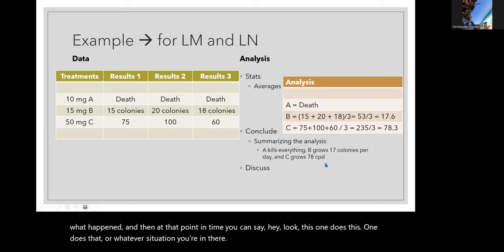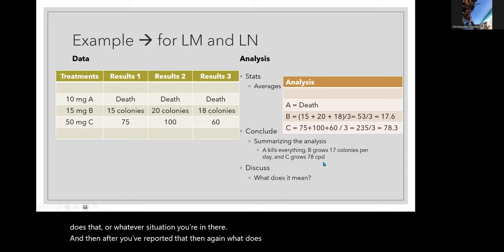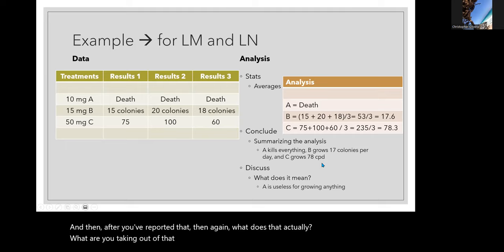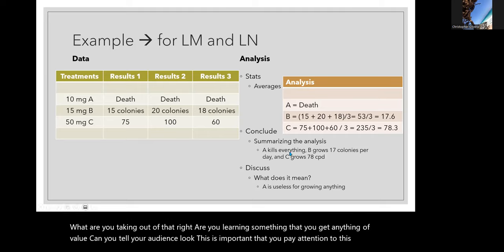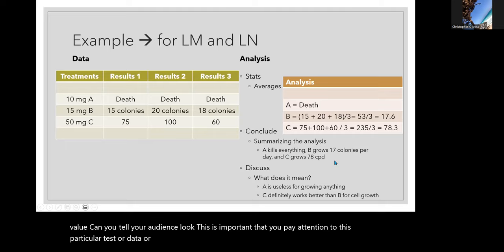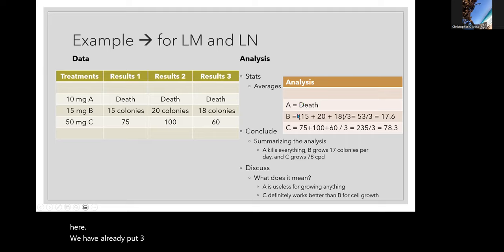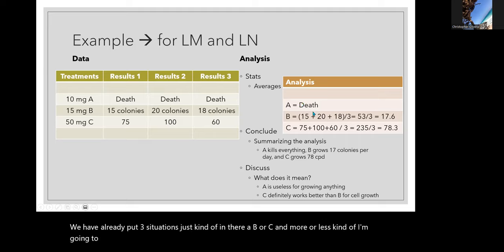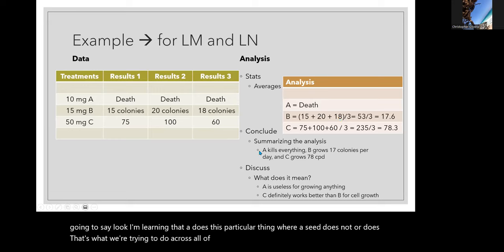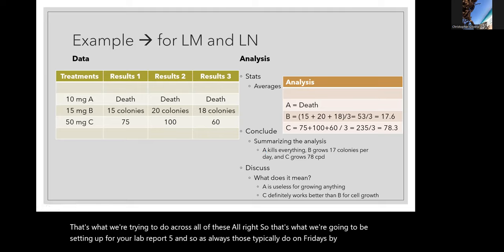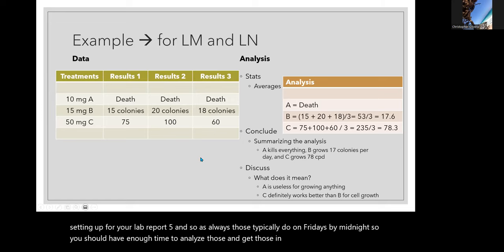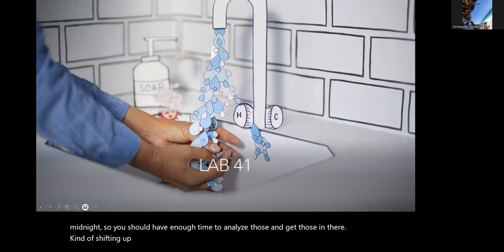After you've reported the conclusion, what does it actually mean? What are you taking out of it? Did you learn something? Can you tell your audience 'look, this is important, pay attention to this particular test or data or situation'? In our case I put three situations — A, B, and C — and we're learning that A does this particular thing where C does not, or does differently. That's what we're going for across all of these. That's the setup for lab report number five, which as always is due Fridays by midnight.